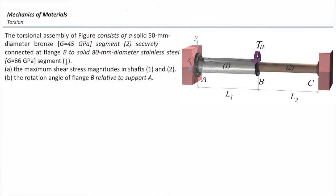The right element is 80 mm diameter stainless steel with the modular rigidity equal to 86 GPa, and that's fixed at left end at A. The problem looks for, how much is the maximum shear stress in shaft 1 and shaft 2? Second part, what is the rotation angle of flange B relative to A?